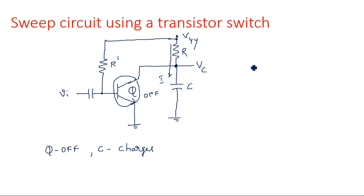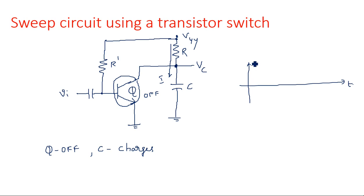The output voltage will increase towards VYY. Initially when the transistor is in off state, the capacitor tries to charge up to VYY because that is the maximum voltage in that path.